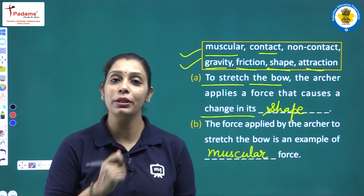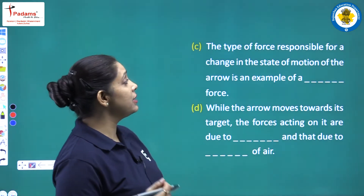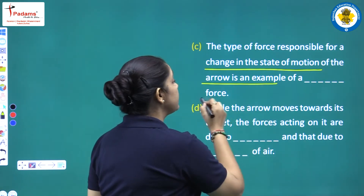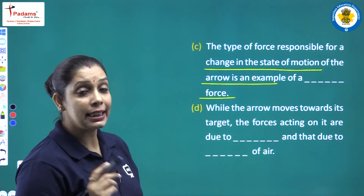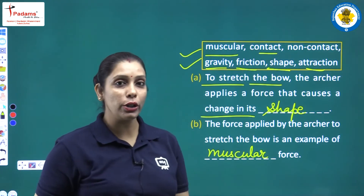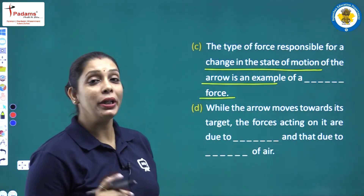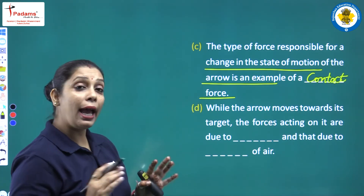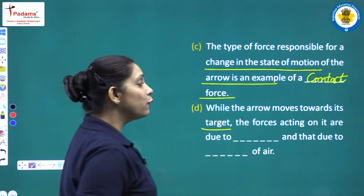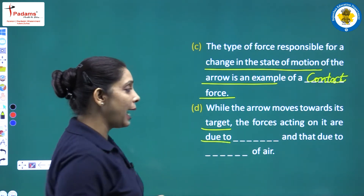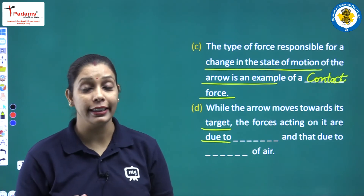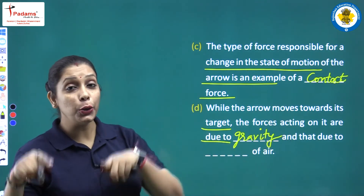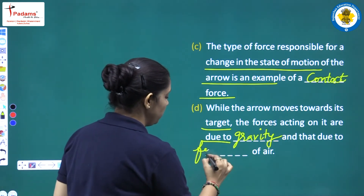Third blank: the type of force responsible for a change in the state of motion of the arrow is an example of contact force — fill in 'contact'. Fourth blank: while the arrow moves towards its target, the forces acting on it are due to gravity and due to friction of air — fill in 'gravity' and 'friction'.